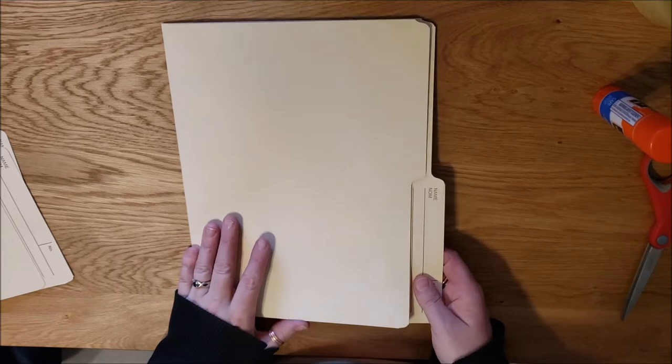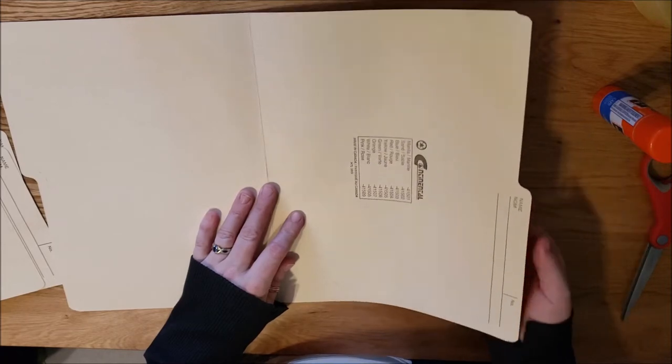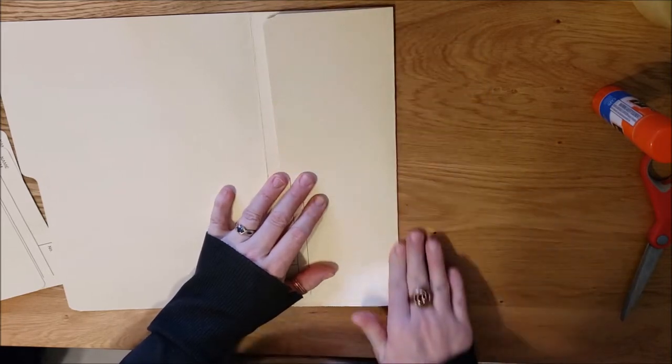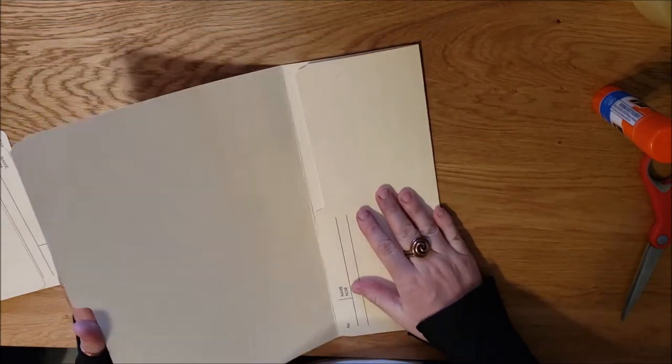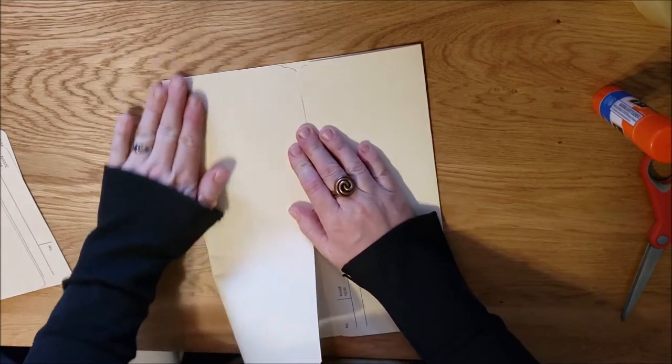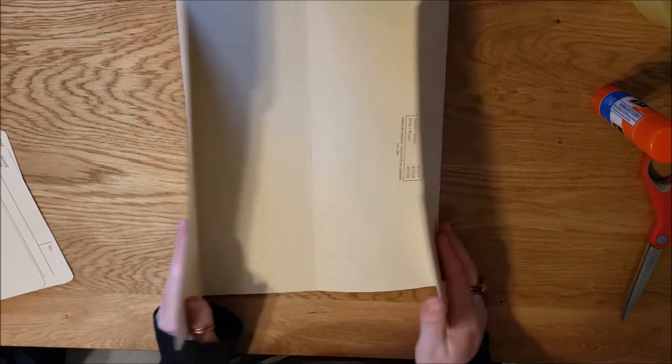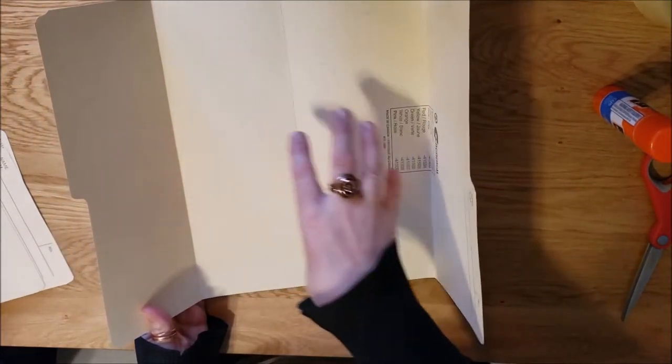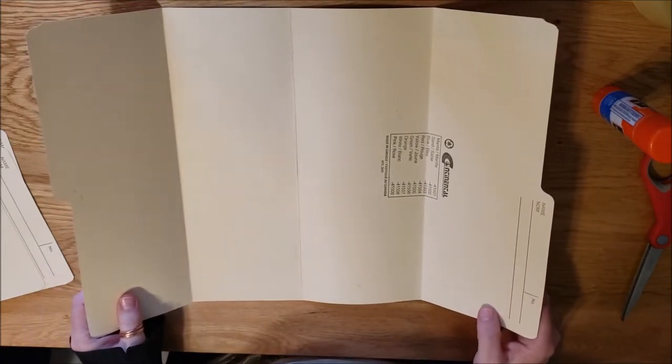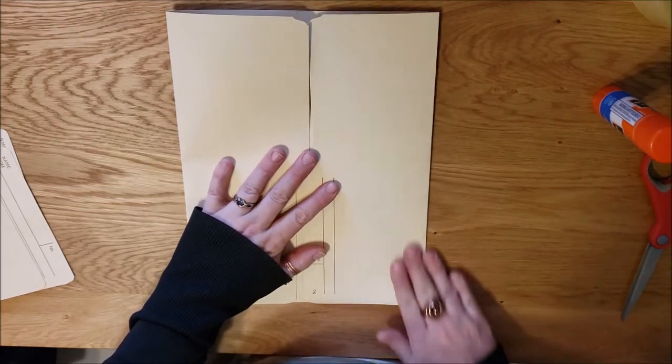For the simplest version of a lap book, you will need one file folder. Open up your file folder. What you're going to do is take the first flap and fold it into the center here, just like that. Then take your second flap and fold it so they cross over like this. This is a very basic structure for a lap book where you would open it up and have information glued on the inside. I'll give you an example in the next segment of what kinds of items are often in lap books. This would be a very basic one folder lap book.